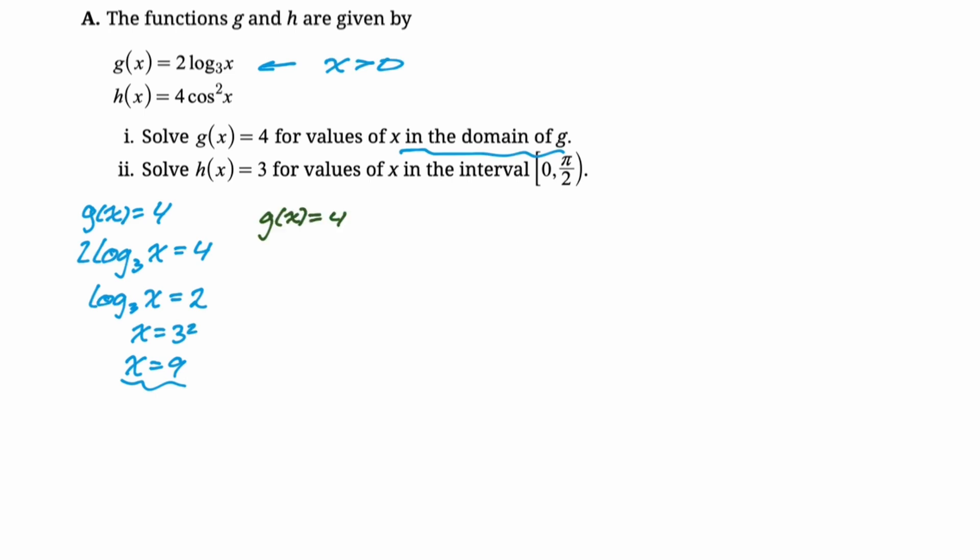Now you might approach this slightly differently. Instead of looking at it as 2log₃(x), you might immediately think I'm going to use coefficients become exponents, which would give you log₃(x²) = 4. This becomes a slightly different problem. It's still base answer exponent. So 3⁴ = x², which means x² = 81. x² = 81 has two solutions: 9 and -9.